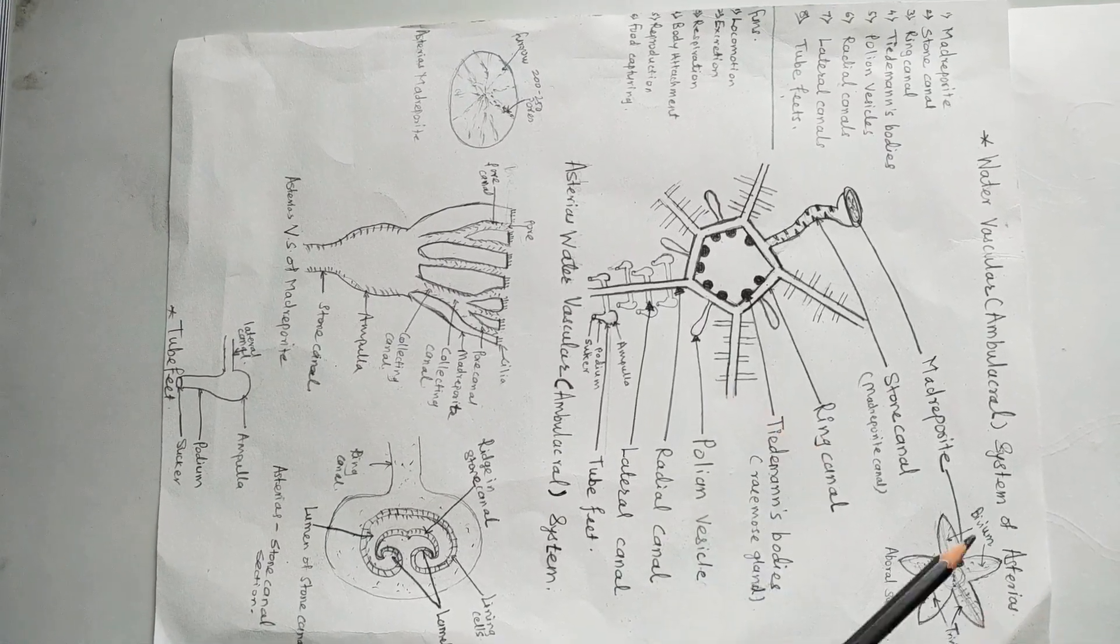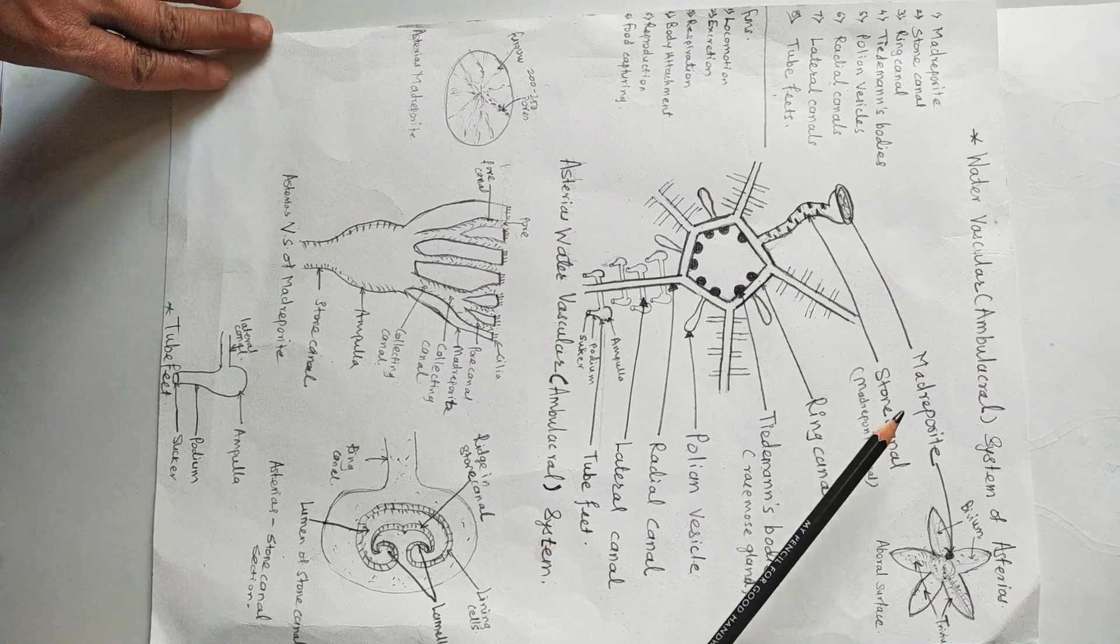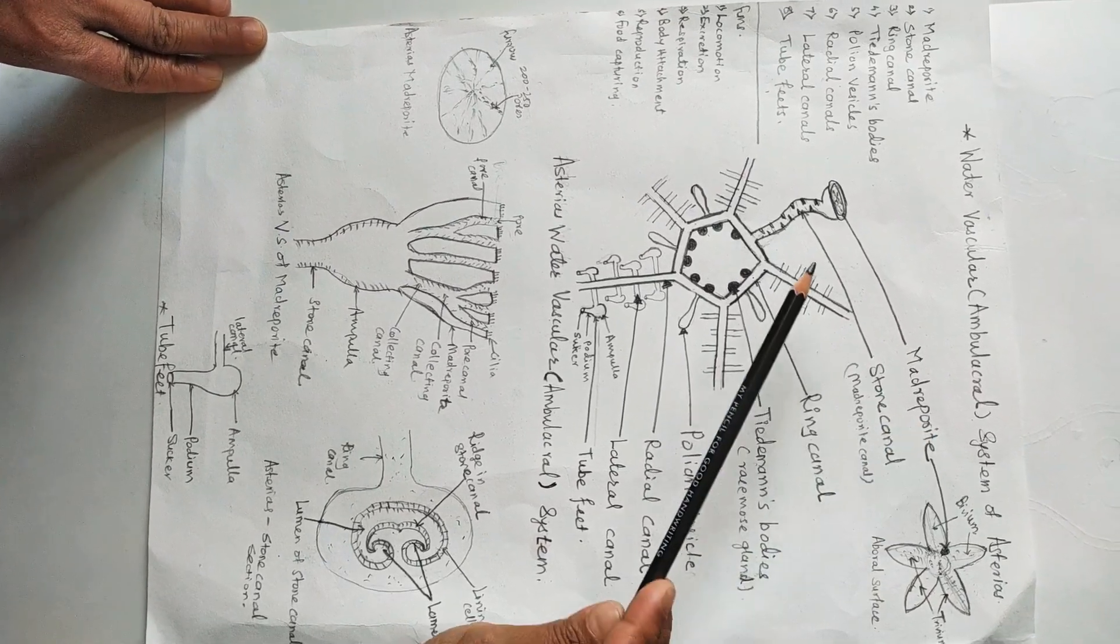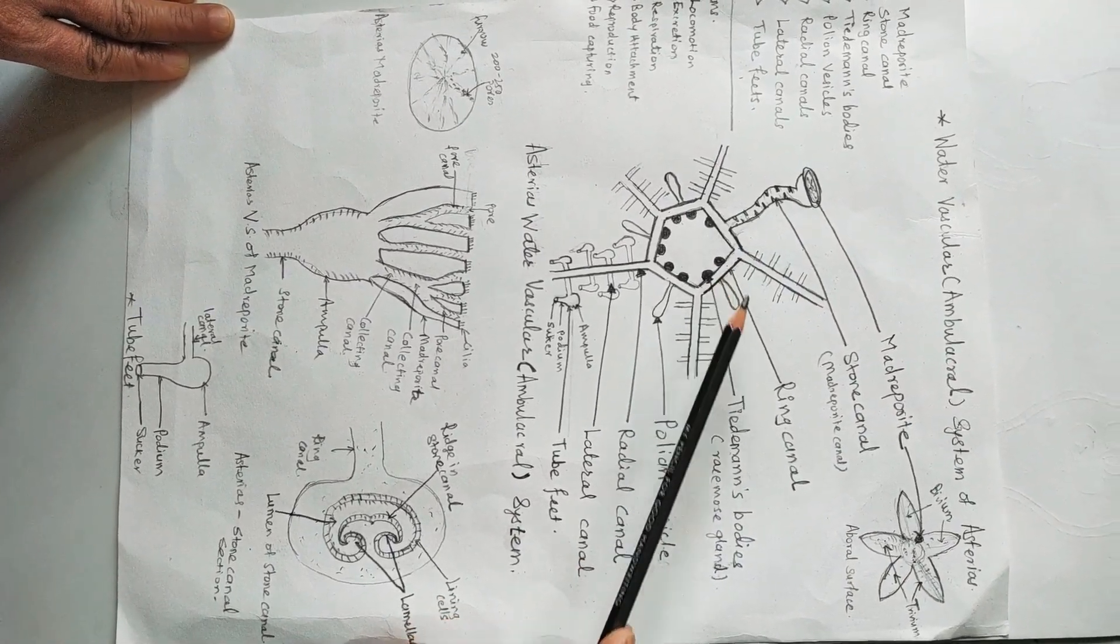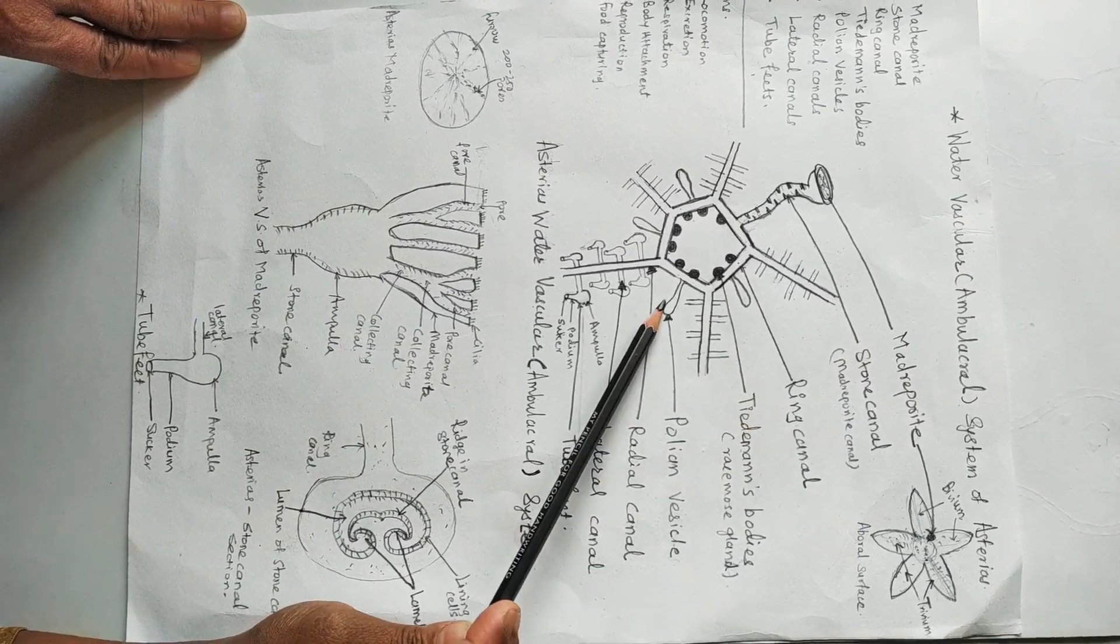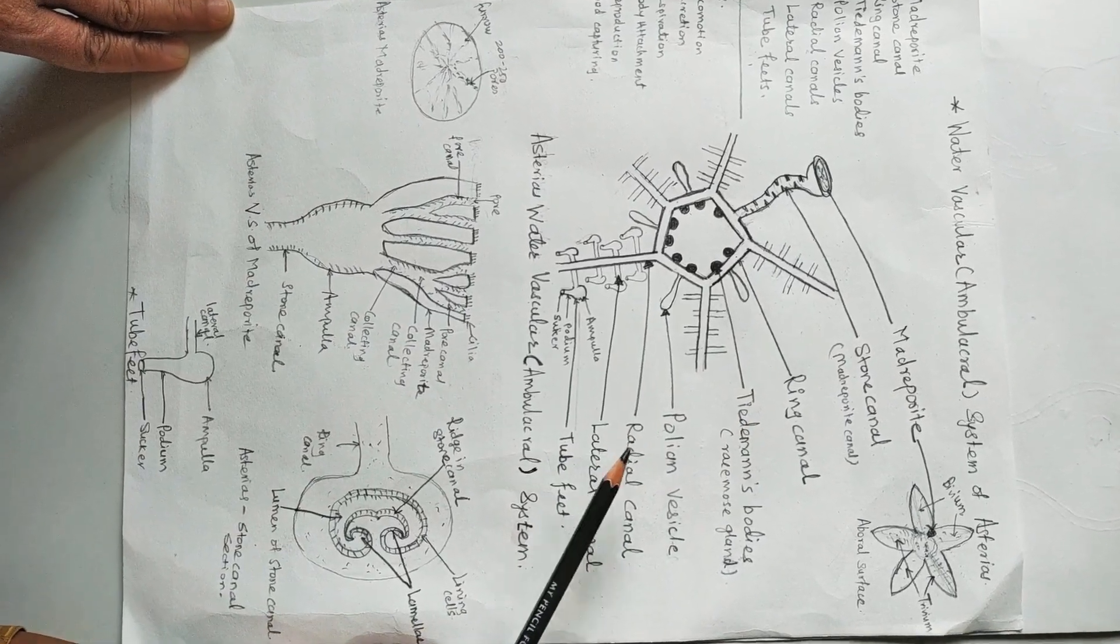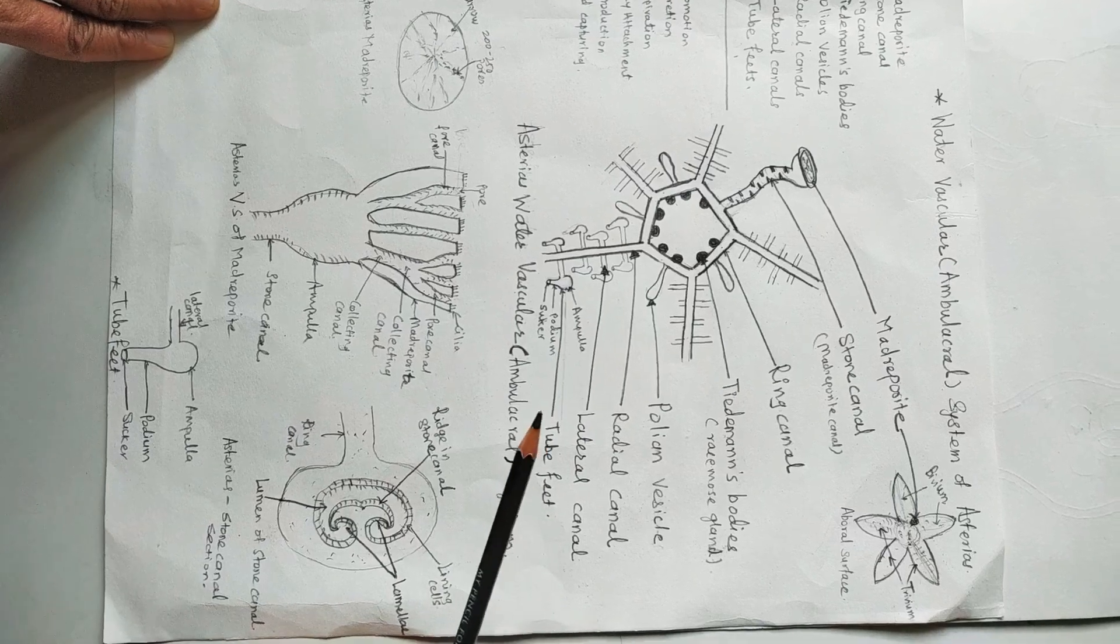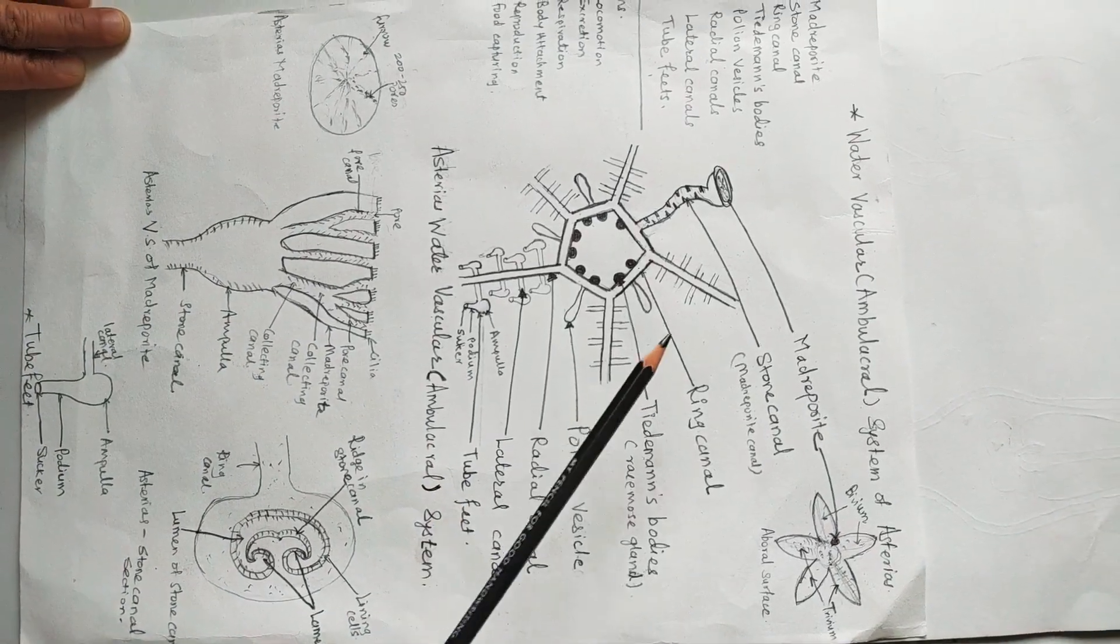Water vascular system of Asterias starts with the madreporite, then stone canal, then ring canal, then Tiedemann's body, then the polian vesicle, then the radial canal, lateral canal, and it ends into the tube feet. We will see one by one.